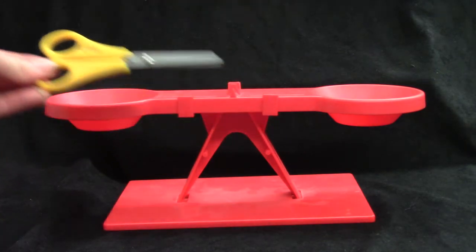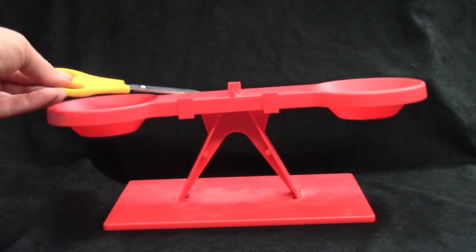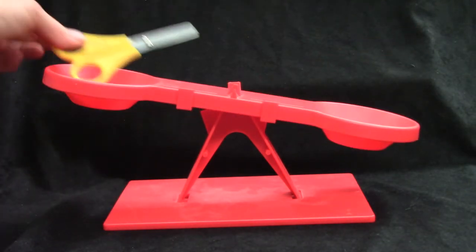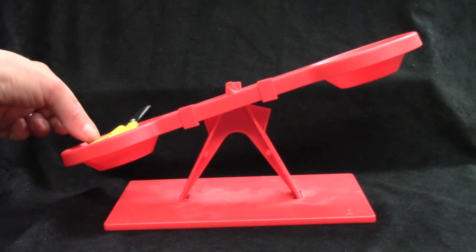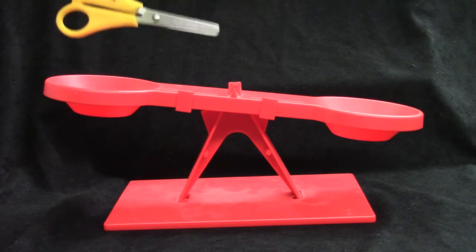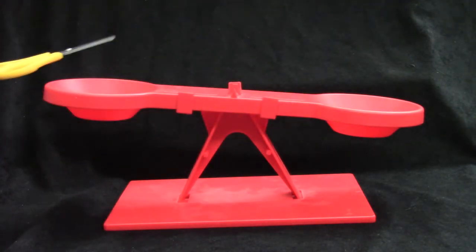If I were to put the scissors on this side of the balance, what do you think would happen? Let's see. Oh, it tipped right over. Why did it tip over? You're right, it's because the scissors are heavier than the nothing that was on the other side.